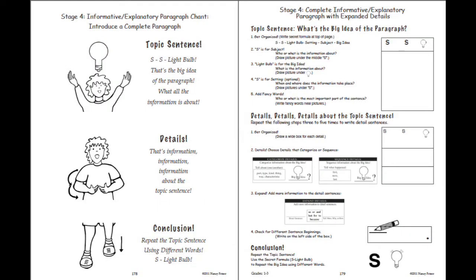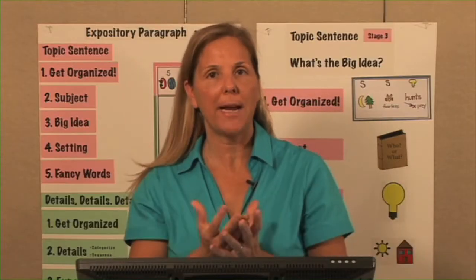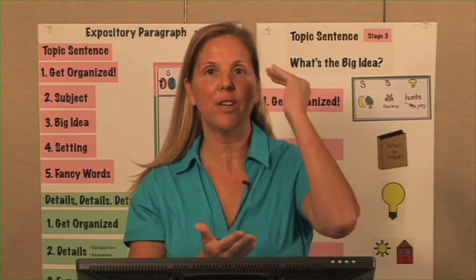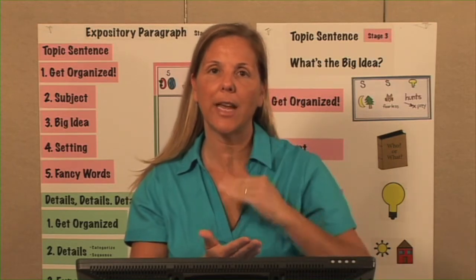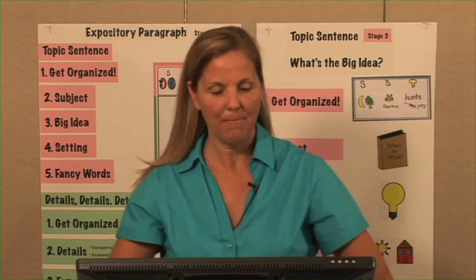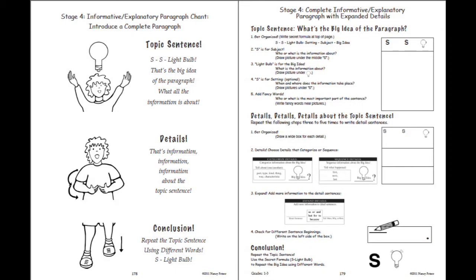Turn to page 178 for stage 4 of informative explanatory writing. This is going to be the full-on paragraph with an official topic sentence, details, and conclusion. On page 178, we're going to introduce the chant, and the pages that include stage 4 go all the way up to page 182.